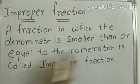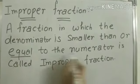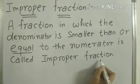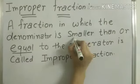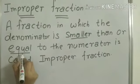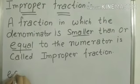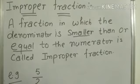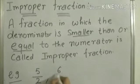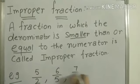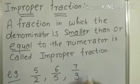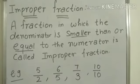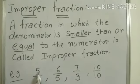Improper fraction: a fraction in which the denominator is smaller than or equal to the numerator is called an improper fraction. For example: 5 by 2, 6 by 5, 7 by 5, 7 by 3, and 10 by 10.